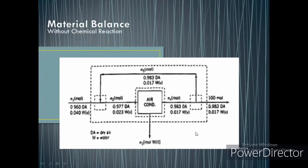We take 100 moles of dehumidified air delivered to the room as our basis for calculation. We are tasked to calculate the moles of fresh feed, the moles of water condensed, and the moles of dehumidified air recycled.